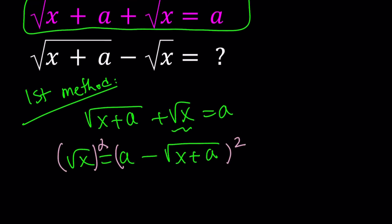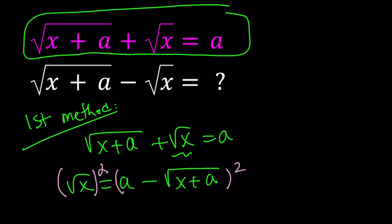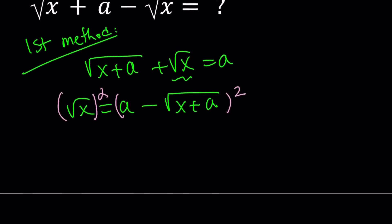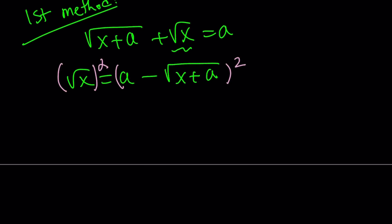You can also square both sides when radicals are on the same side, but that is going to create another radical. Well, it doesn't matter. Either way, I guess that could be the fourth method. So this is going to be x equals a squared minus 2a square root of x plus a plus that radical squared is going to be x plus a.